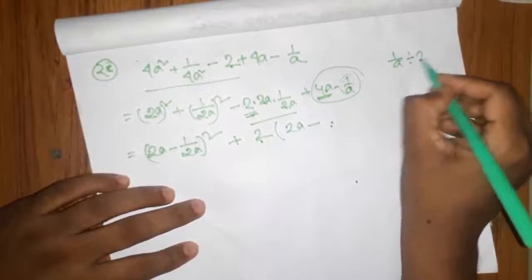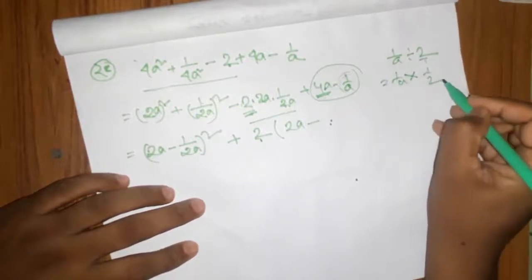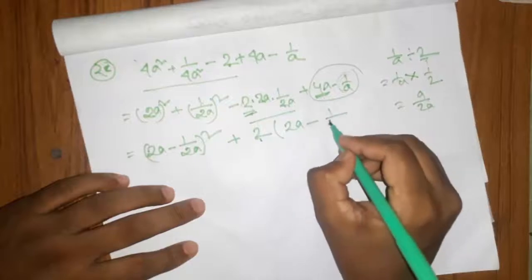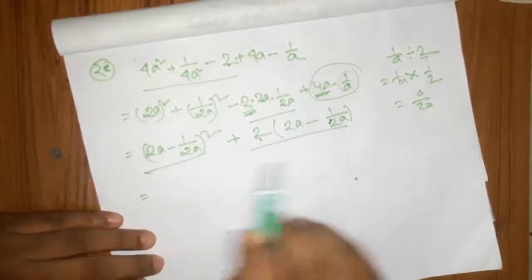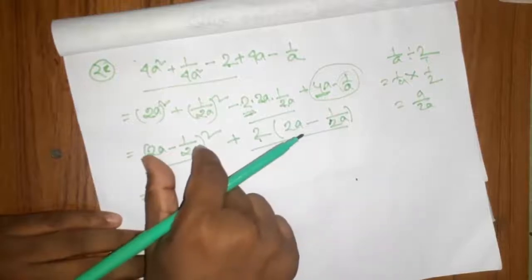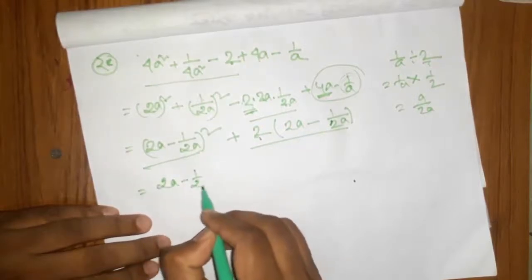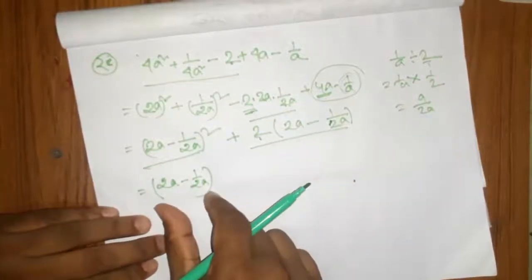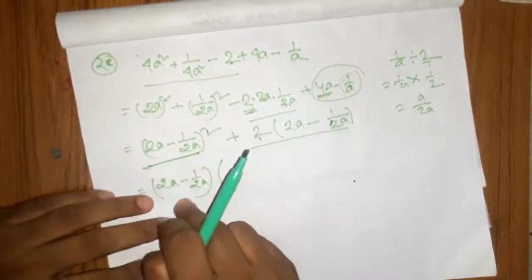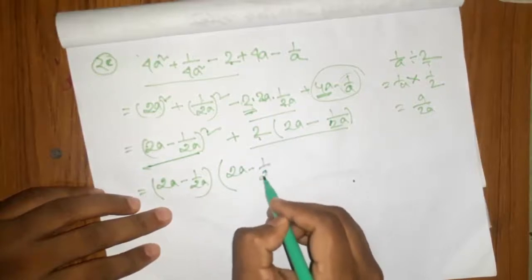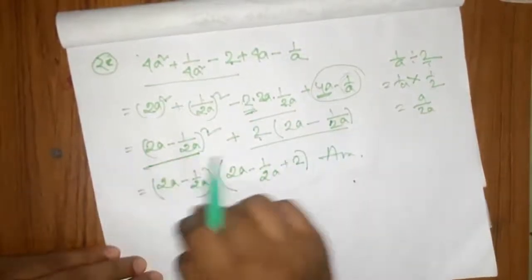2a, 1 by a, 1 by a, 2a, 1 by a, 2a, 1 by 2a. 2a minus 1 by 2a is common. Common is common. 2a minus 1 by 2a is common, 2a minus 1 by 2a is common, 2a is common.